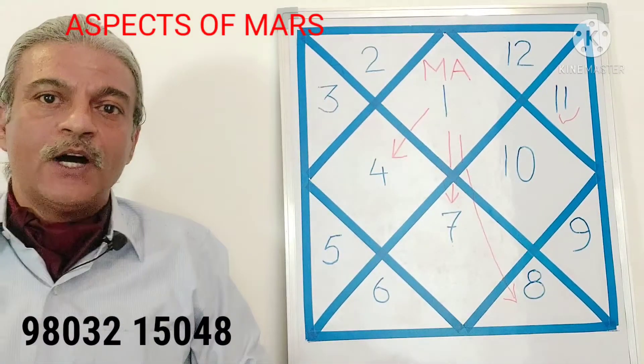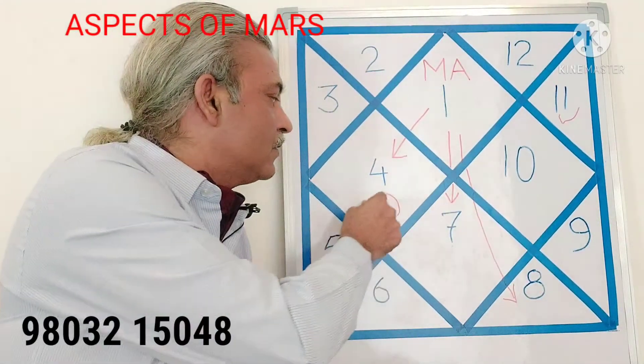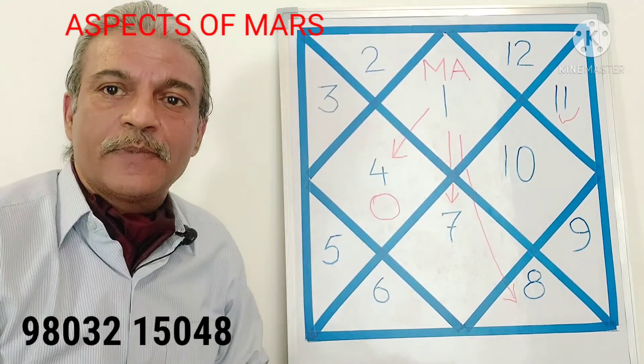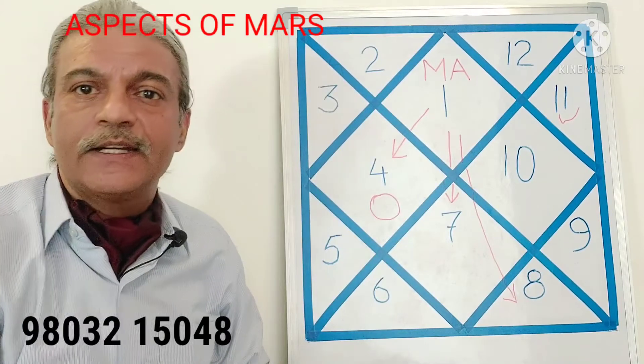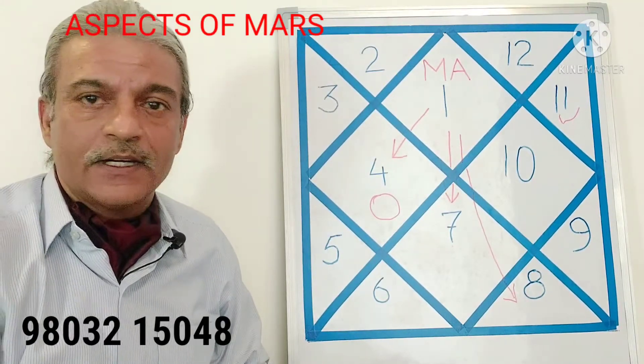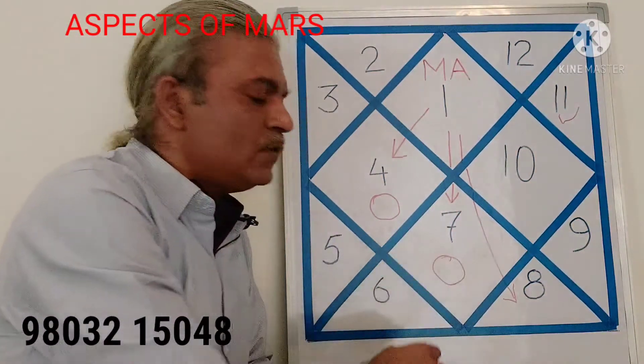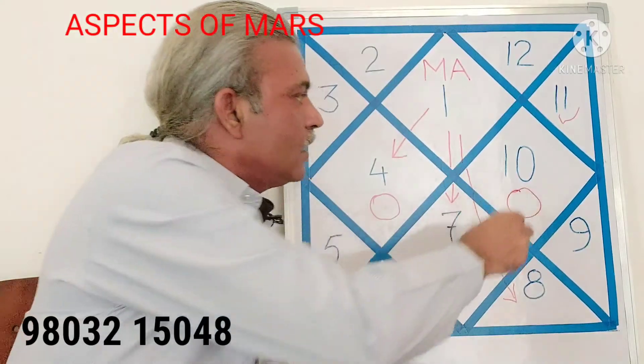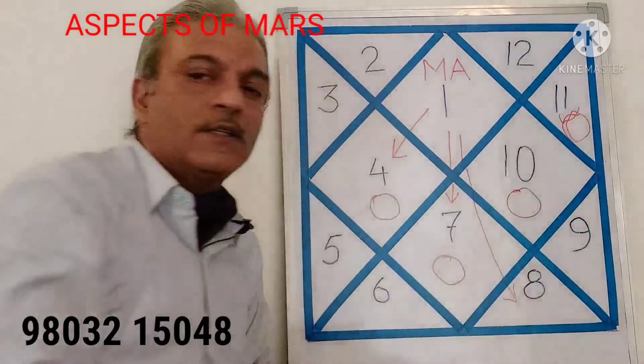Similarly, if Mars is sitting, let us say in the fourth house, from here, it will aspect the houses which are at fourth, seventh and eighth position to it. That is one, two, three, four, this house, five, six, seven, this house, and eighth, which is this house.